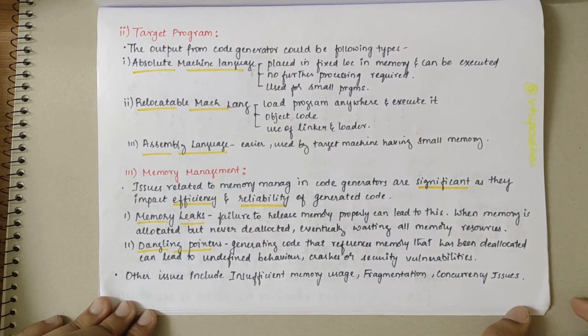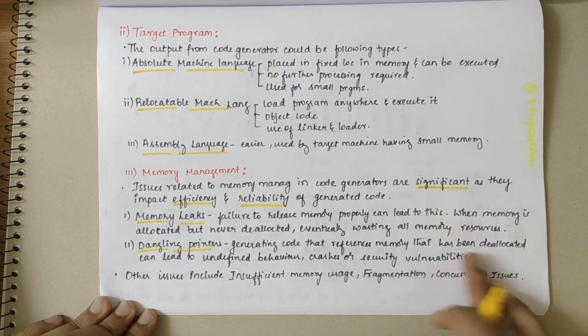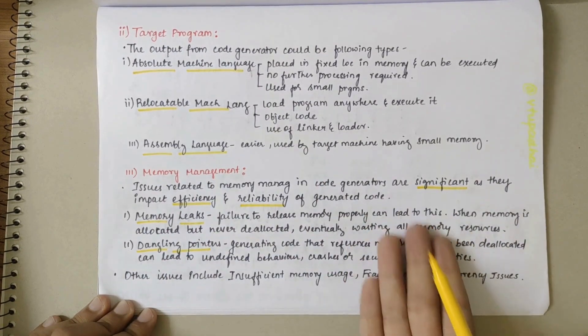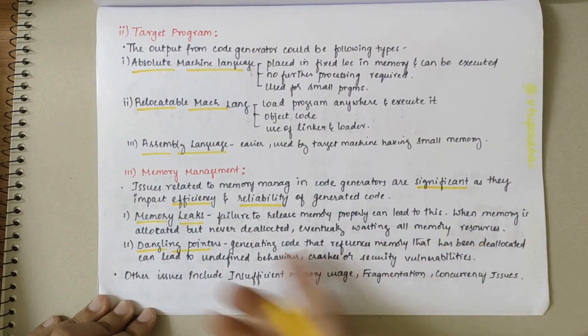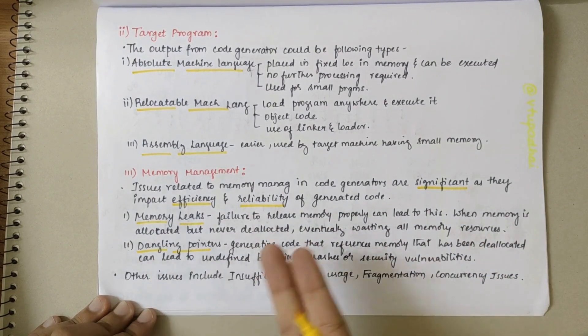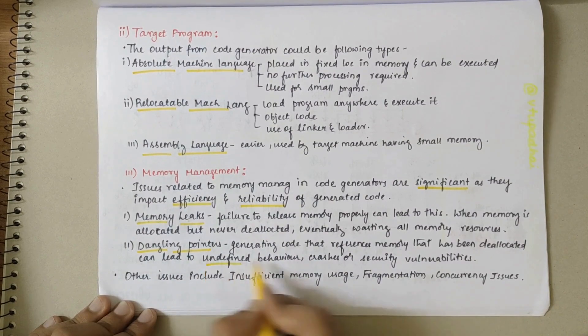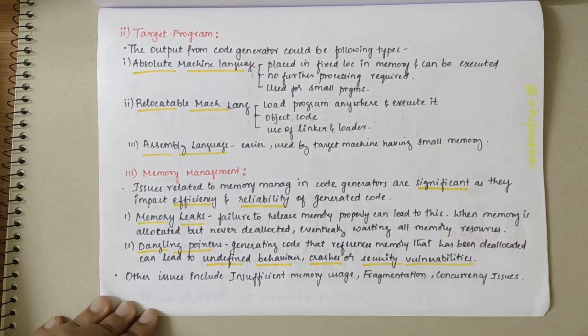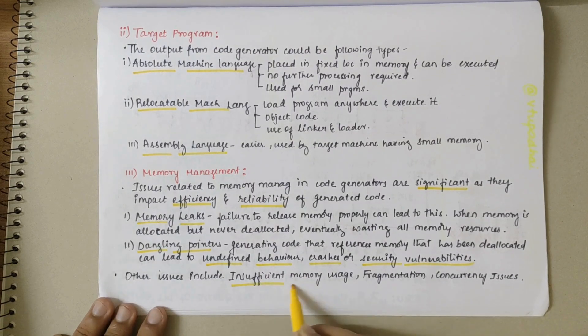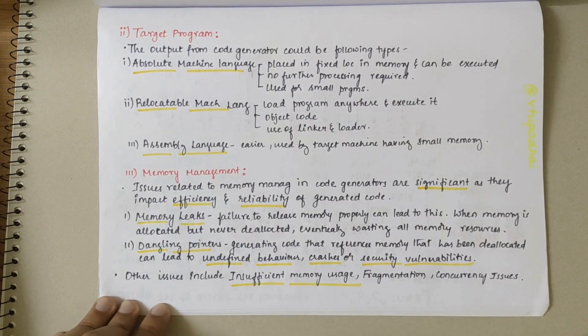Then we have dangling pointers - generating code that references memory that has been deallocated. If you visit that particular memory location, it's null, it does not exist. By this it can lead to undefined behavior, it could lead to crash or security vulnerabilities.